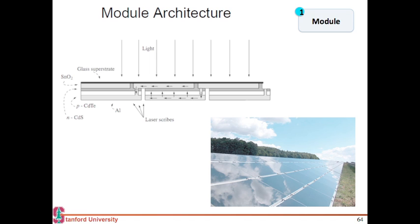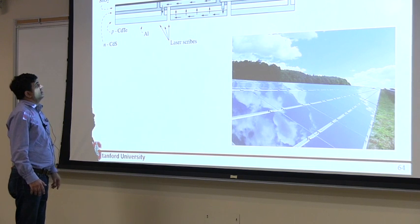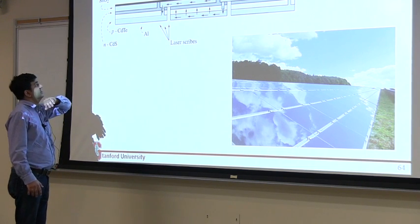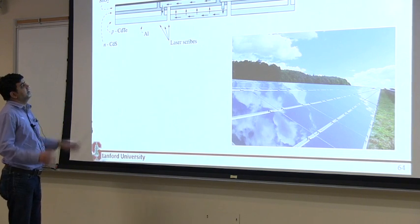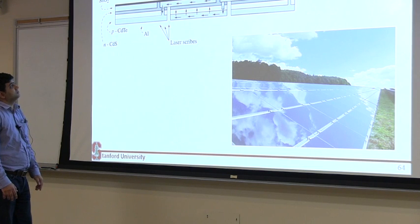So from each of these cells you are able to collect your carriers effectively. And this is done by using this laser scribe which is used to separate these layers into individual cells.